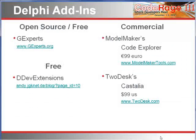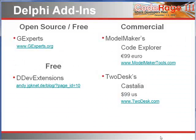So here's the tools we're going to look at, in exactly that order: the open source GExperts, the free DDEV Extensions, the commercial ModelMaker's Code Explorer, and 2Desk's Castellia. ModelMaker is priced in Euros — for those of you on this side of the pond, that is about $125.